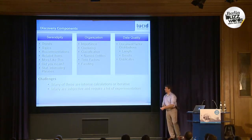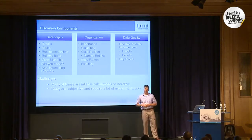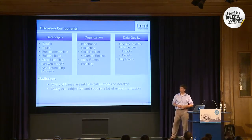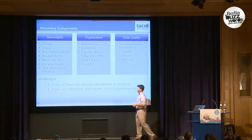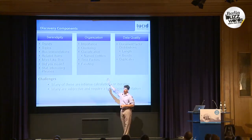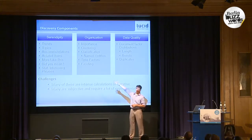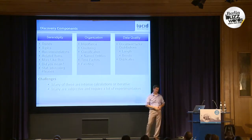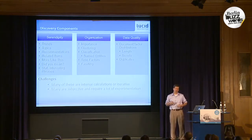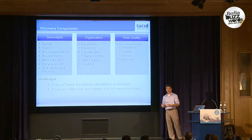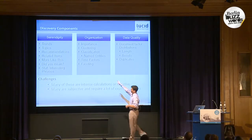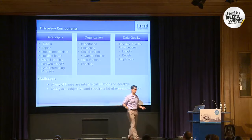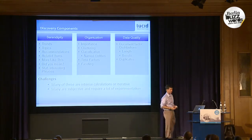On the discovery side, there are a couple of different notions. I talked about serendipity a bit earlier — I'd add another column around organization of your content, and then this notion of: is my data really good, are there ways I can improve it? On the serendipity side, you're all familiar with these from living on the internet — what's trending, what are the topics of interest, how can I recommend content, doing 'more like this', 'did you mean?', and statistically interesting phrases. At the organization level, this gets down to that aggressive prioritization — the evolving notion of importance, like Google's priority inbox.